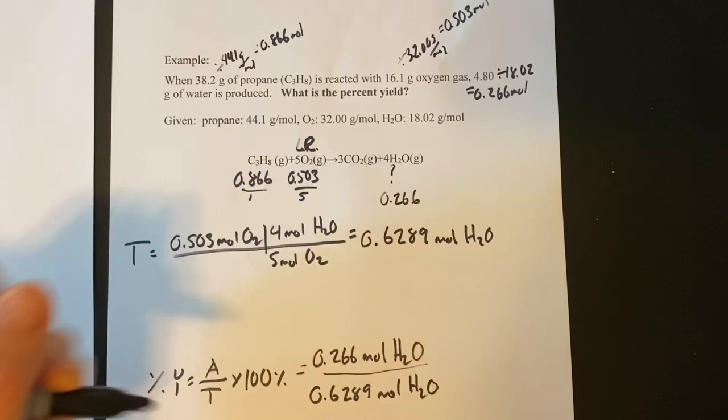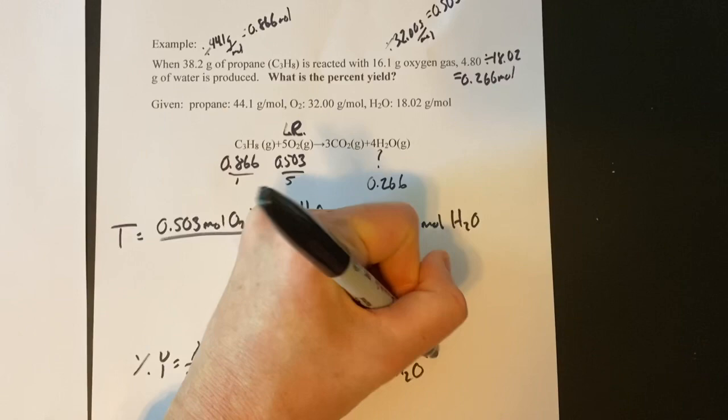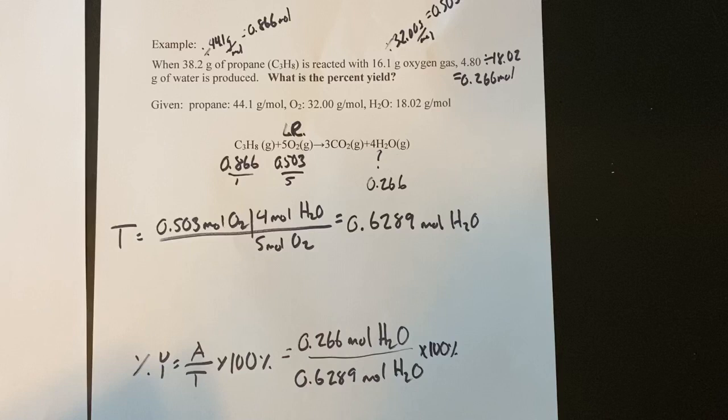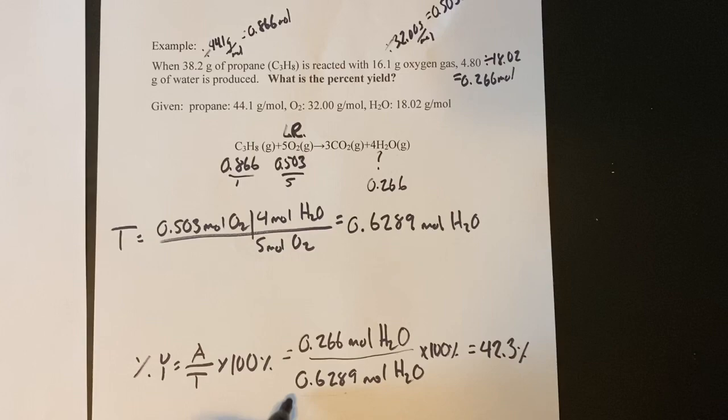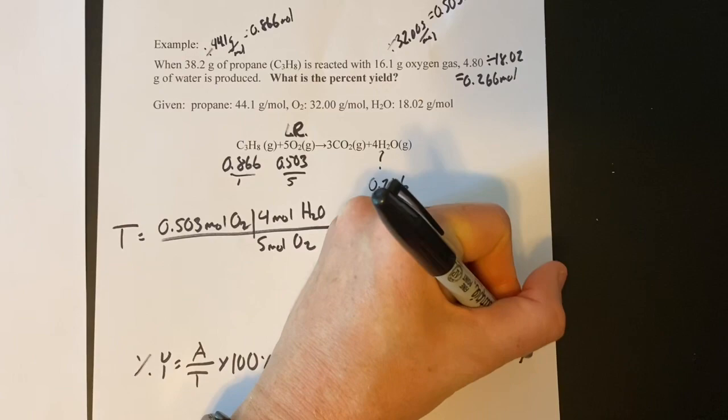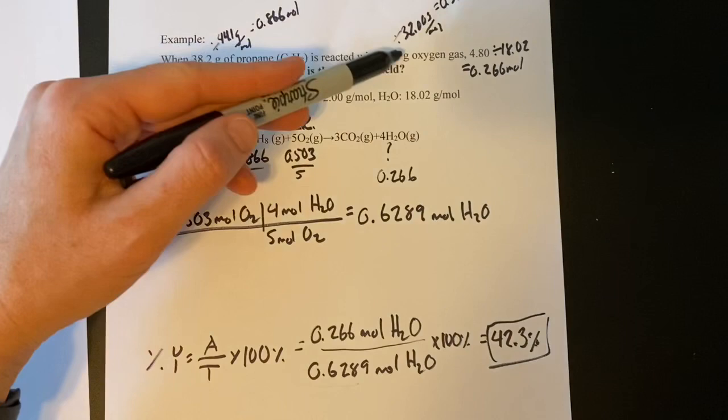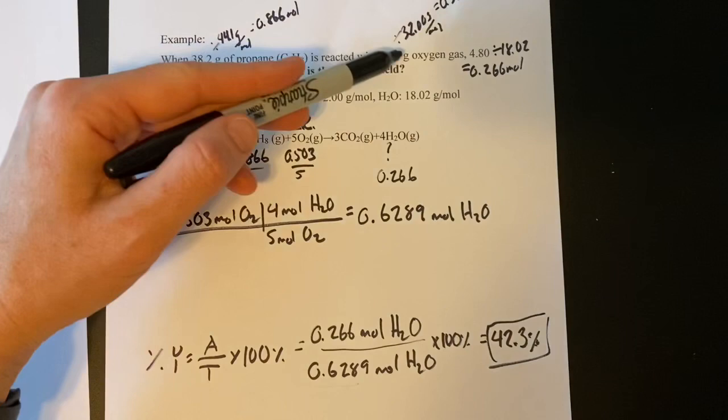And now I can plug it in here. You want to make sure you're writing units all the way through so that you can ensure that this is moles and this is water and you multiply it by 100%. Okay, 0.266 divided by 0.6289 times 100% and I get an answer of 42.3% and it should have three sig figs because everything we've done had three sig figs and we used them all the way through. And so our answer is 42.3%. So of what you should have gotten when you reacted these two things, you made 42.3% of what you should have gotten.